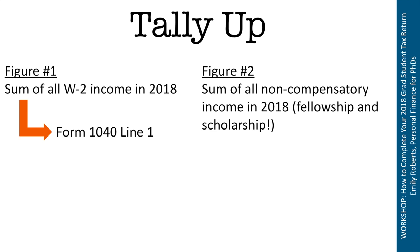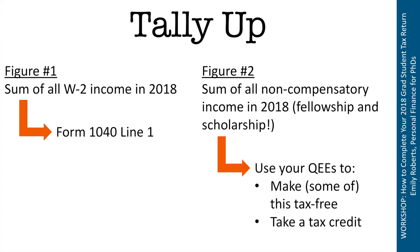Figure one is easy: pop that into Form 1040, line one — the sum of all your W-2 income. For figure two, you have to use your QEEs — qualified education expenses — to adjust that number before plugging it into your tax return or tax software. You'll do one of two things: use your QEEs to make some or all of figure two tax-free, or report some or all of figure two as income and also take a tax credit.